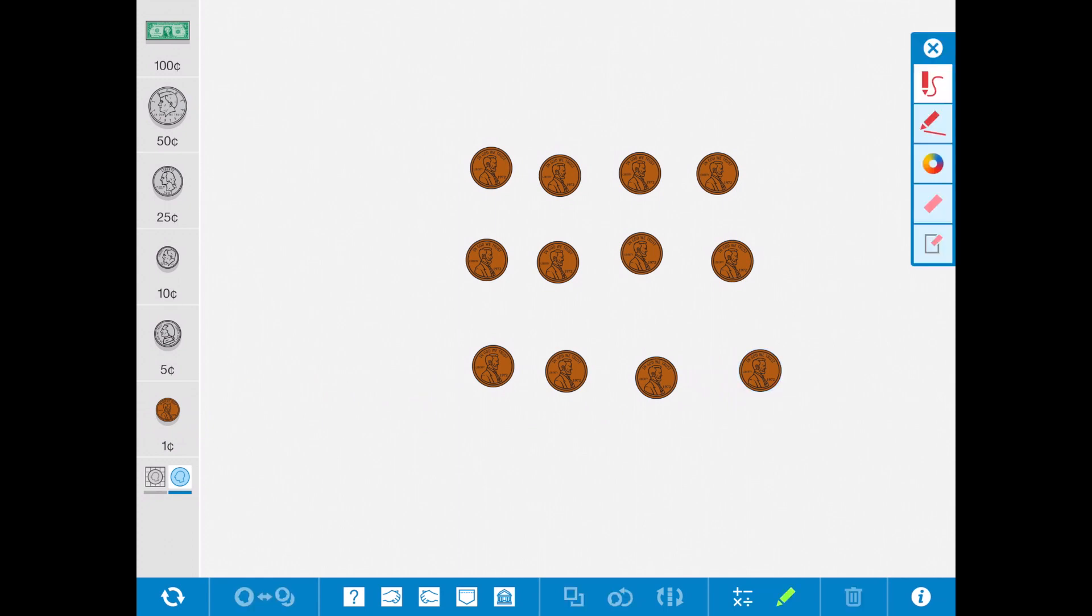Maybe you thought about those rows and see, oh, there's four here, there's four here and four here. If I add those all together, it would be 12. Or maybe you thought about the columns and thought, oh, there's three here, three here, three here, and three here. And if I add up each of those, that would be 12.